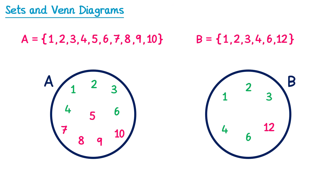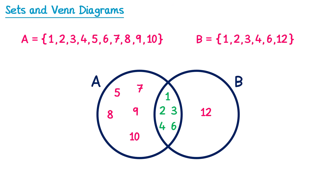This means we're able to overlap these circles to create a Venn diagram, where the numbers that are in both set A and set B are placed in the overlapping section in the middle. Notice how all of the numbers between 1 and 10 are still inside the A circle, and all of the factors of 12 are still inside the B circle. The number 11, for example, is not in set A and not in set B, so it would need to go outside of the circles.